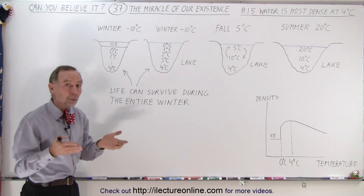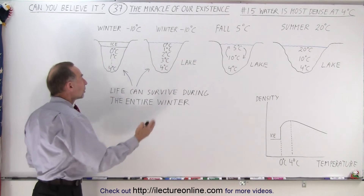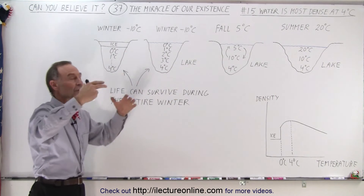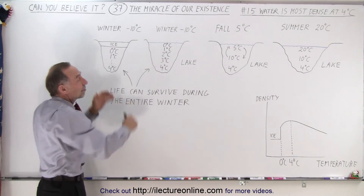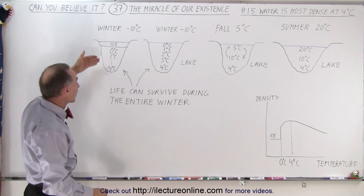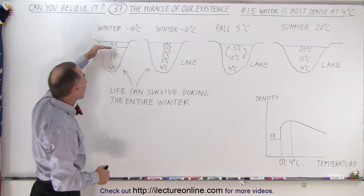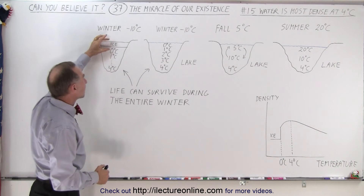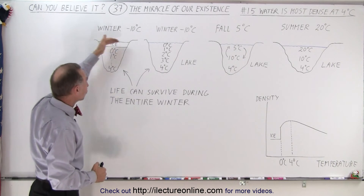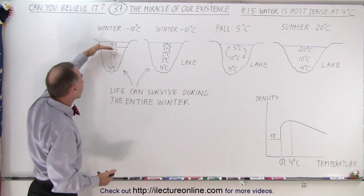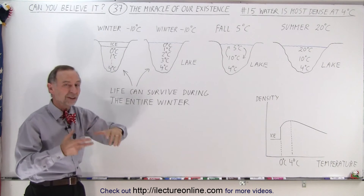Any big lake will remain unfrozen at four degrees Celsius at the bottom all winter long. Life can continue to exist while winter rages outside at very cold temperatures — all the fish, plants, and everything can simply survive because the water remains at about four degrees Celsius at the bottom. Only the water near the ice at the top gets colder than that, but remains unfrozen because the ice forms a thick layer that conducts heat poorly, especially when covered with snow, which acts as an even better insulator. The lake remains unfrozen because the heaviest water at four degrees Celsius sinks to the bottom.